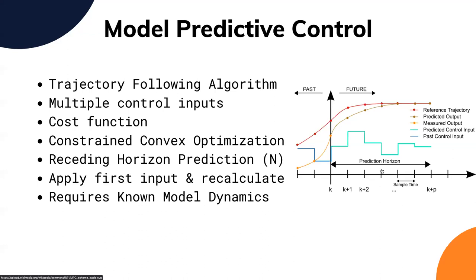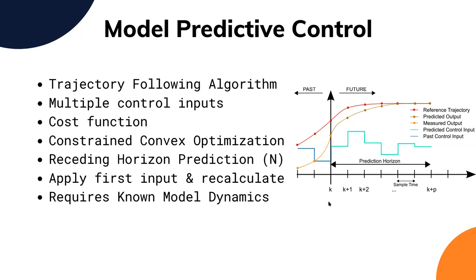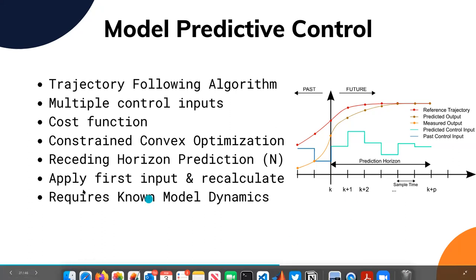Now let's discuss Model Predictive Control and two of its variants originally presented in the paper by Alexander. Model Predictive Control is basically a trajectory following algorithm, but unlike PID, MPC is based on prediction and can optimize multiple signals at the same time while also following multiple constraints. The problem formulation requires a cost function that captures the optimization goals.